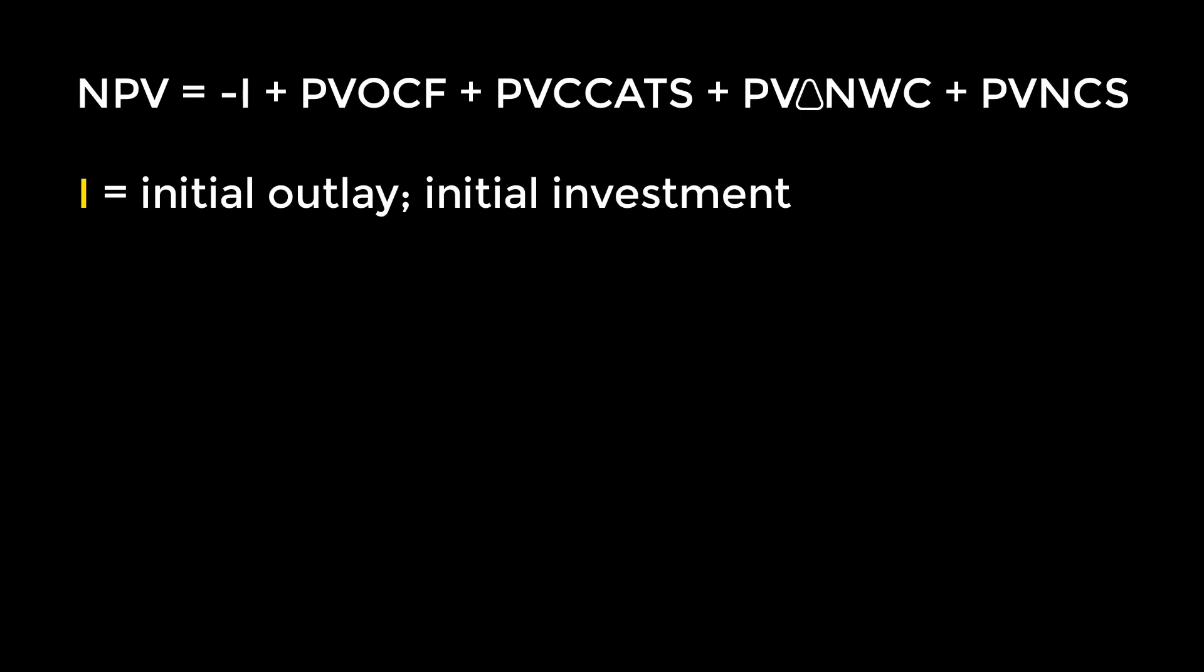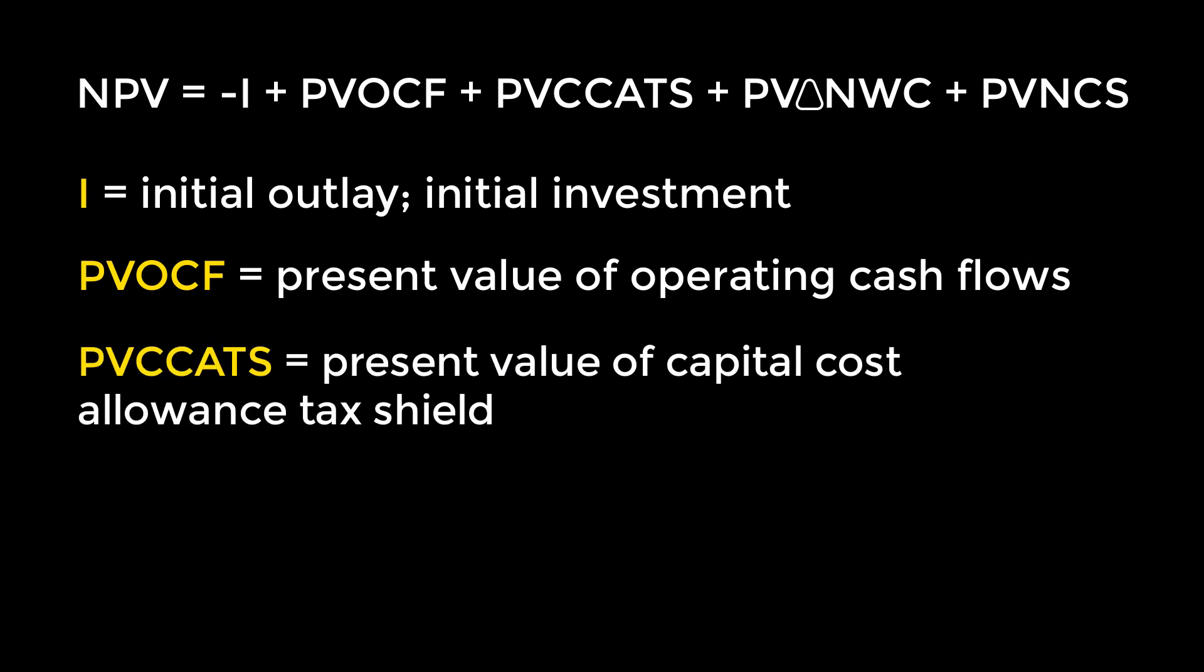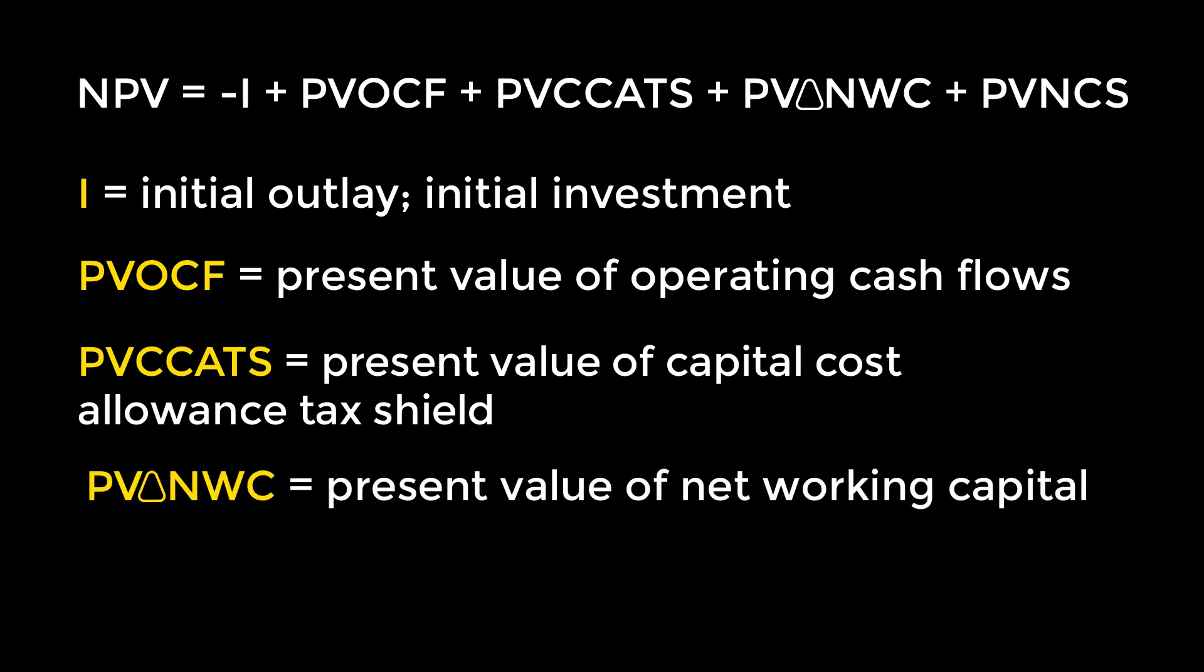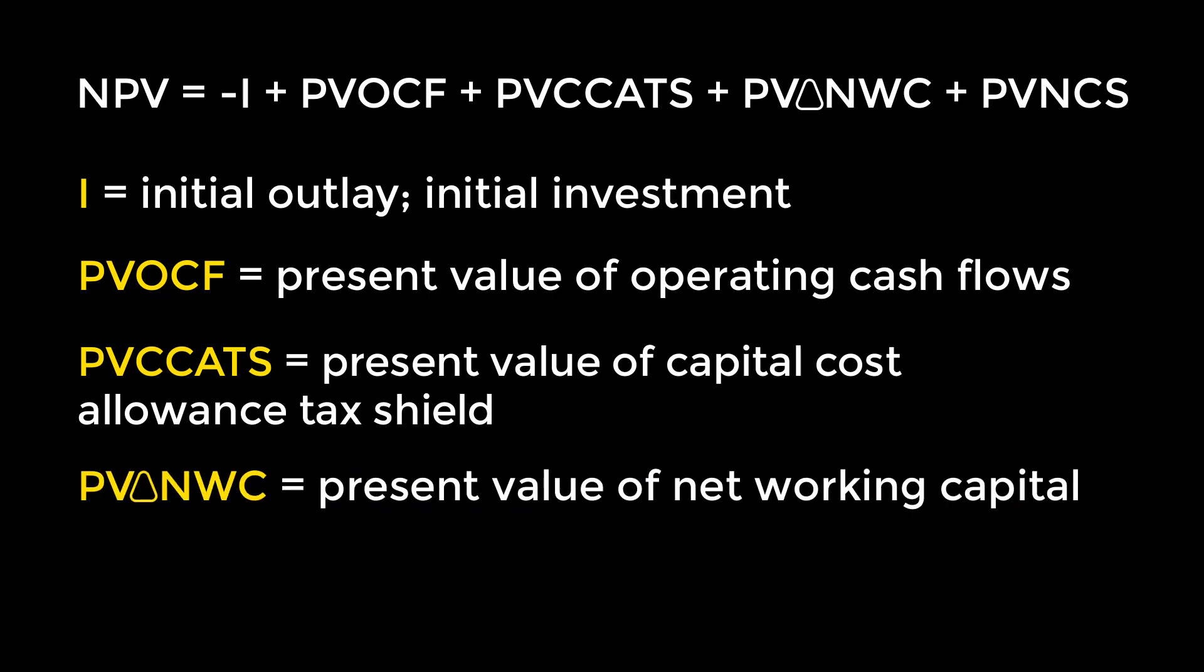The formula for NPV is as follows. I is the initial outlay of the project. PVOCF is the present value of the operating cash flows. PVCCATS is the present value of the capital cost allowance tax shield. PV∆NWC stands for the present value of the change in net working capital. And PVNCS stands for the present value of net capital salvage. Each of these break down further, except I, which is either given directly or we will be given a bunch of extra information and be expected to sort out relevant and irrelevant costs, like we did in the previous two problems.